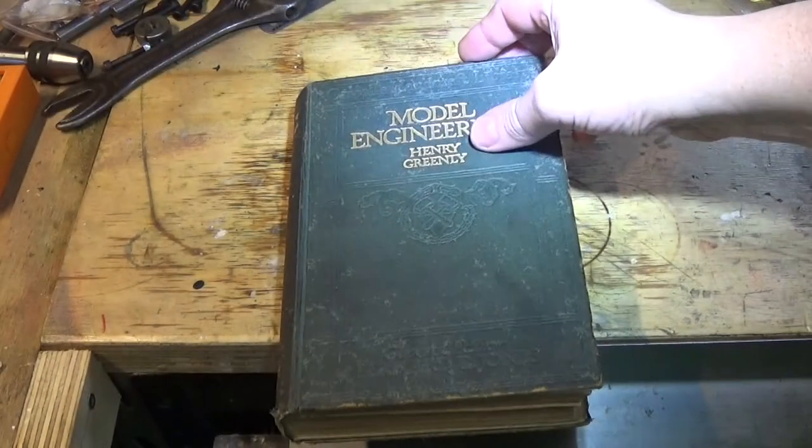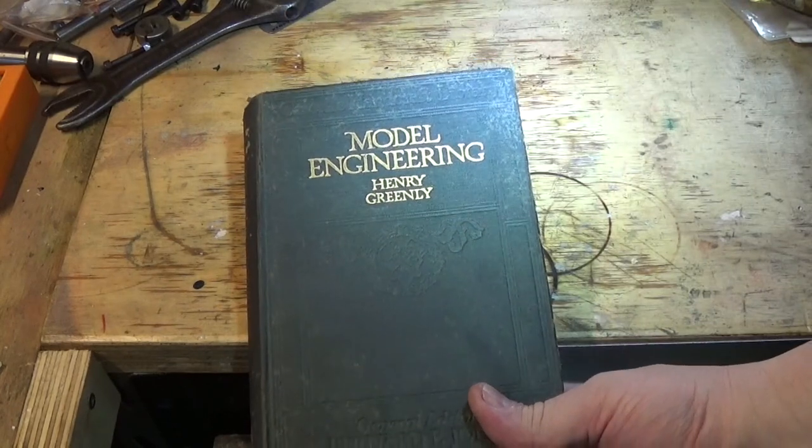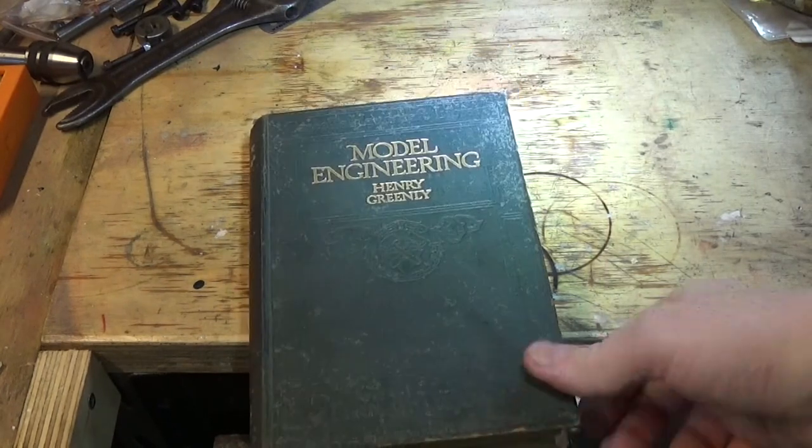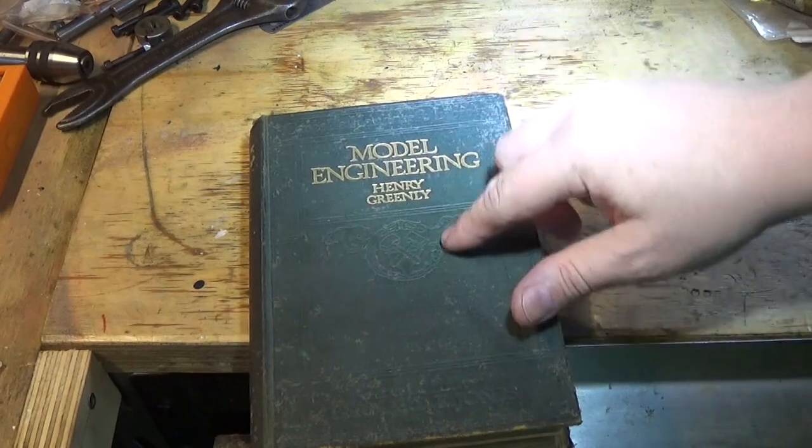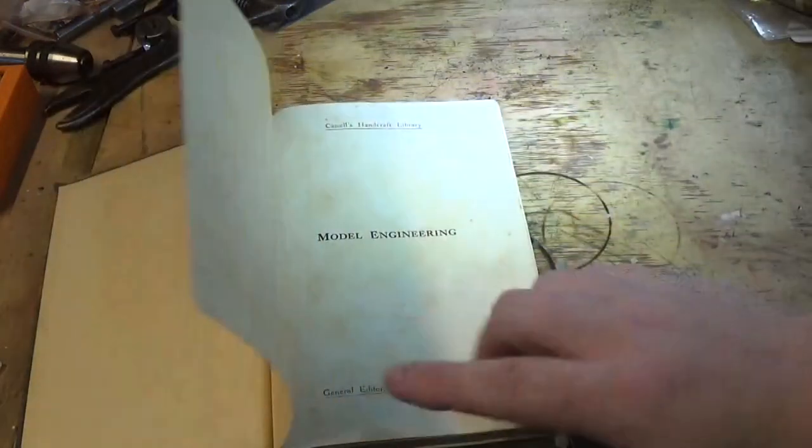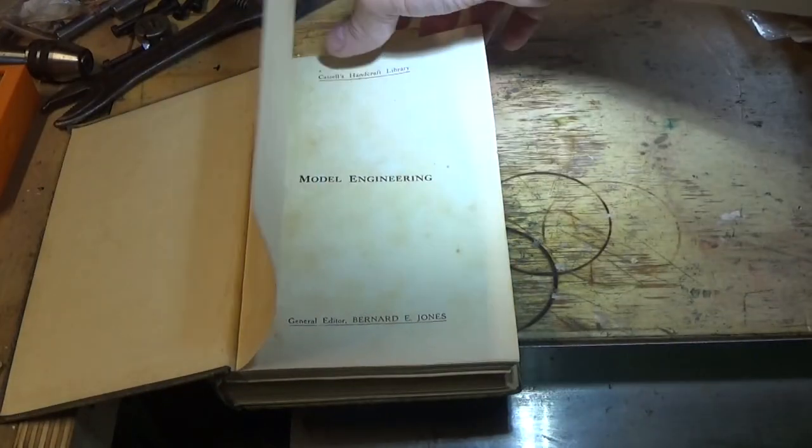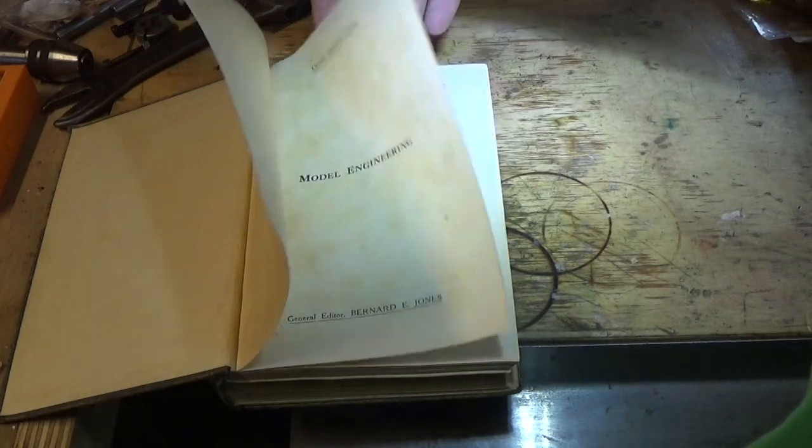This book is basically a series of articles to English Mechanics, or probably Model Engineer, that Henry Greenlee wrote. It was edited by Bernard E. Jones and it's a Castles book, so it would have been printed by Castles.